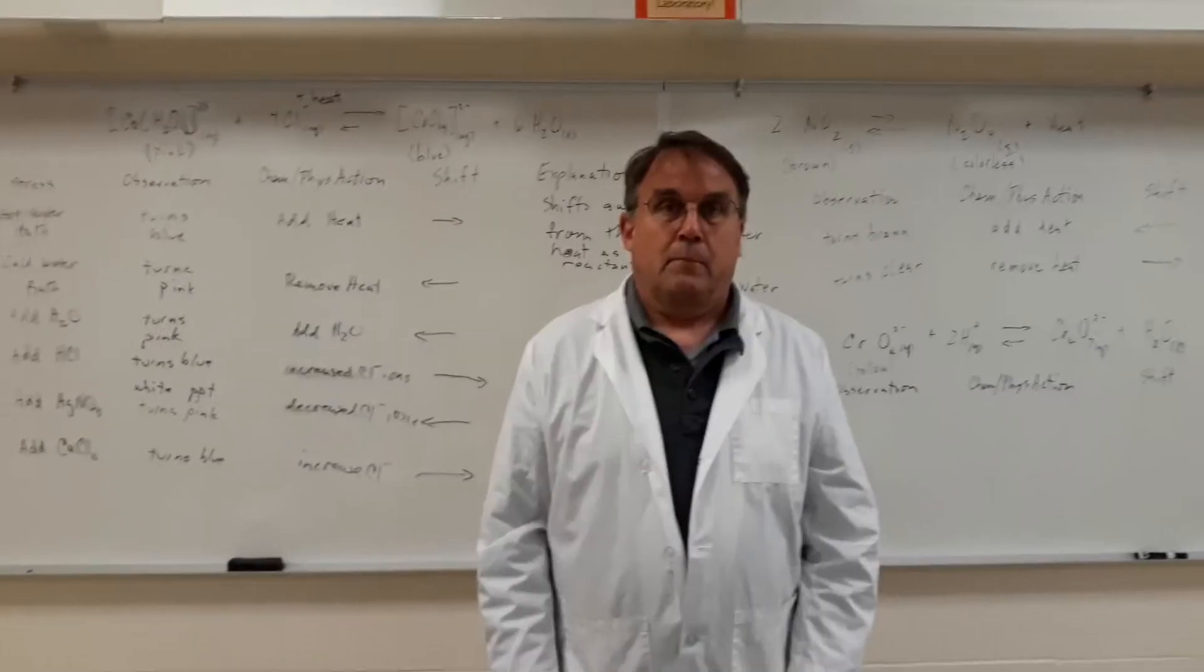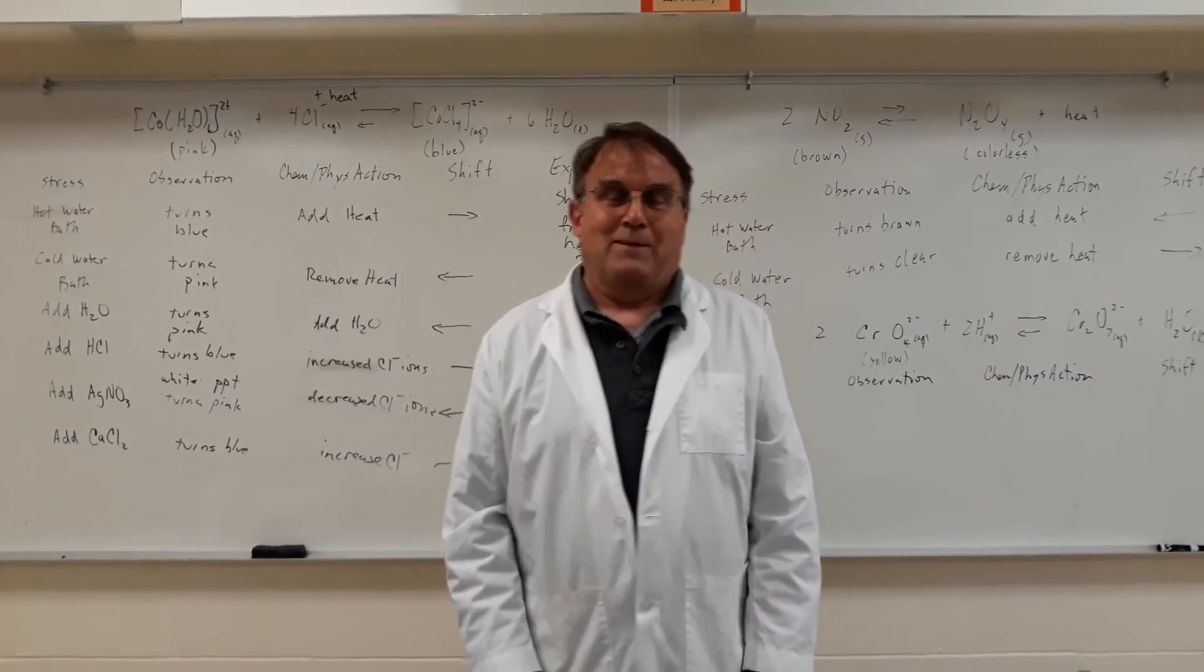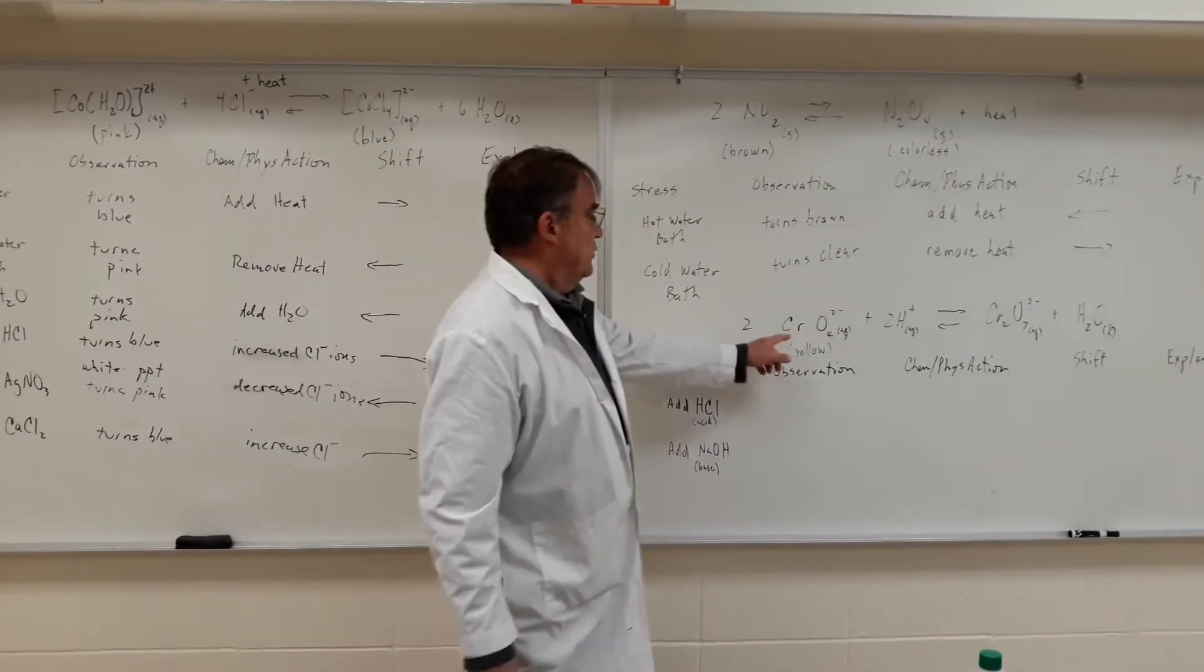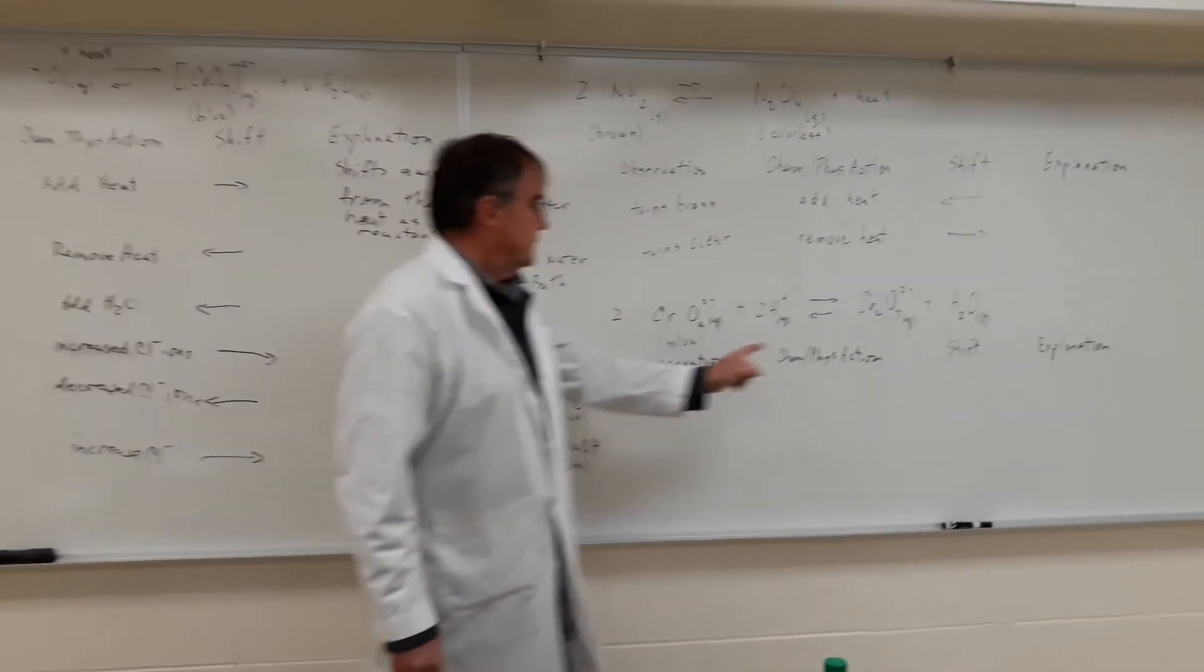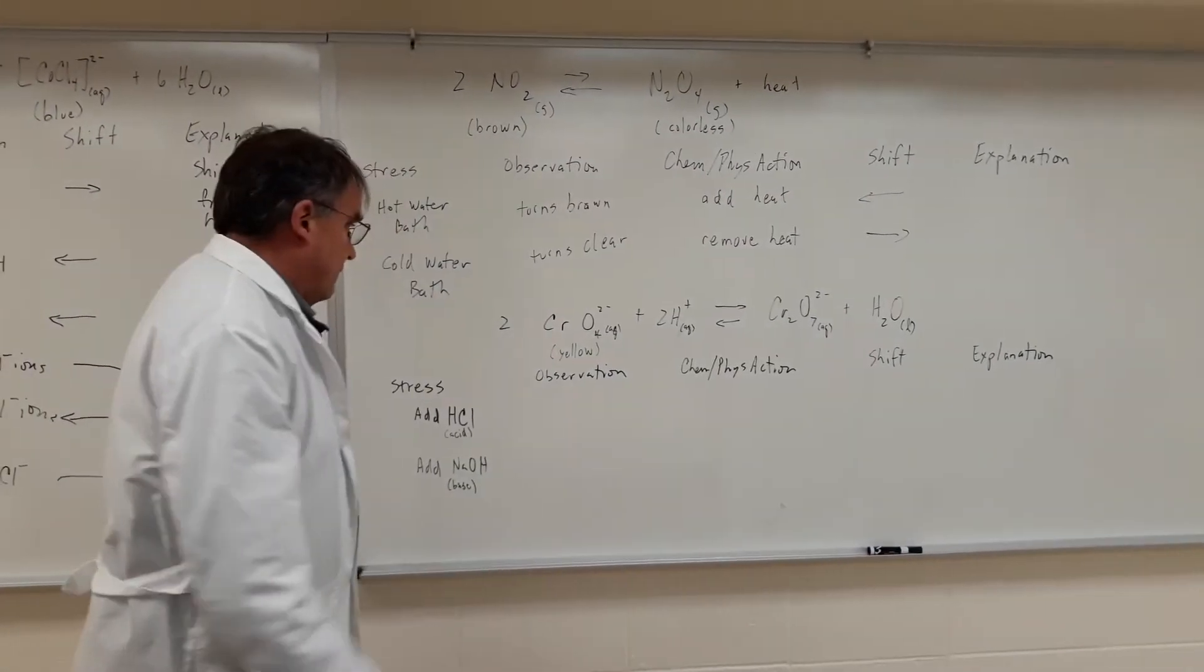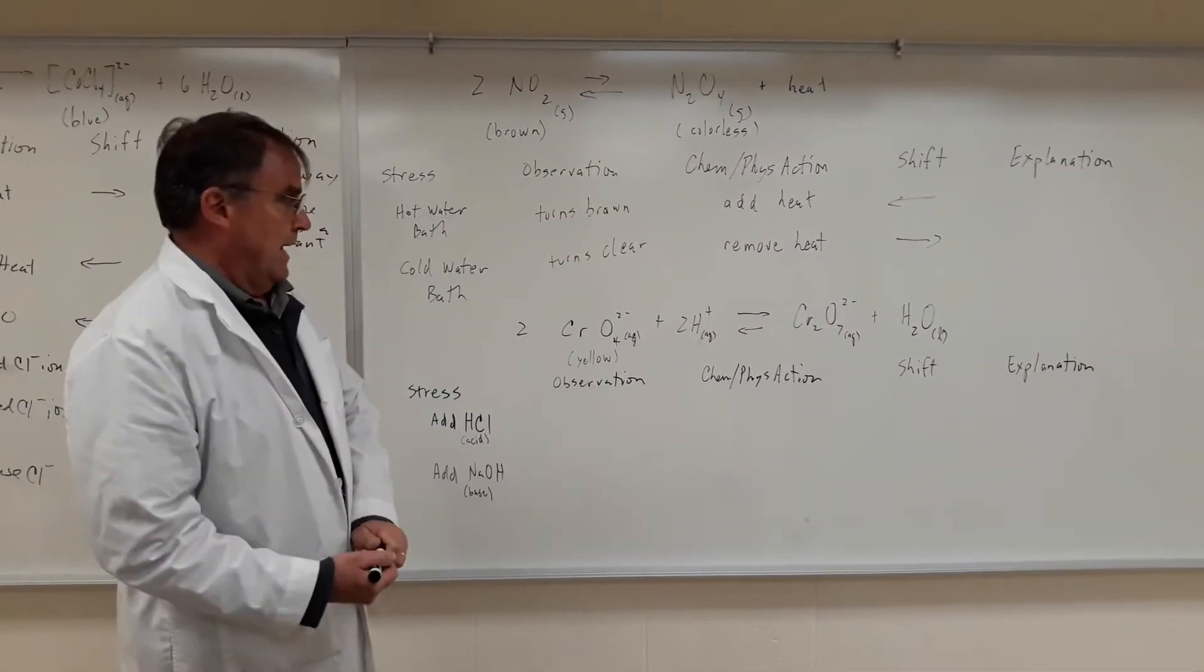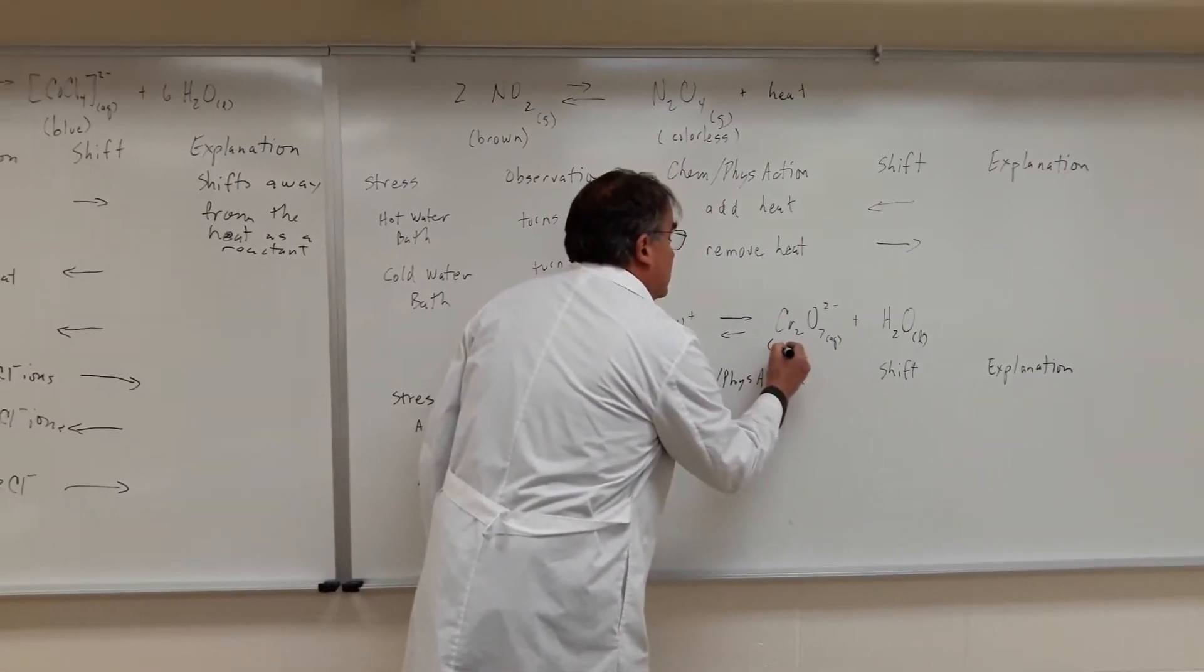Awesome. So the last equilibrium we are going to stress out is the equilibrium between two common all atomic ions, the chromate ion and the dichromate ion. First of all, the chromate ion is a vivid yellow. And the dichromate ion is a very bright orange.